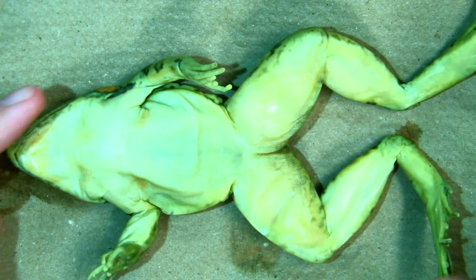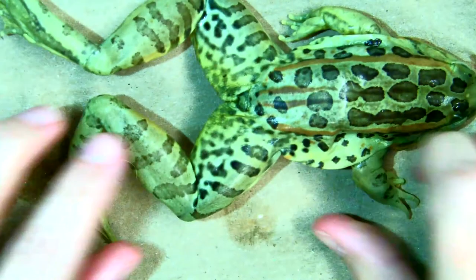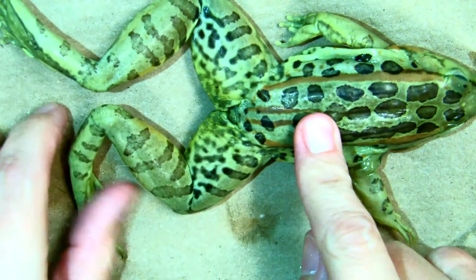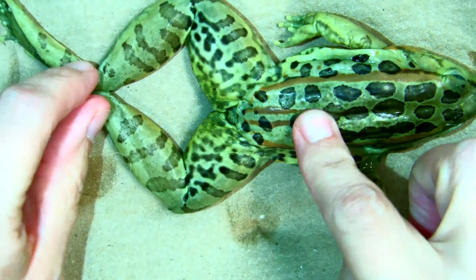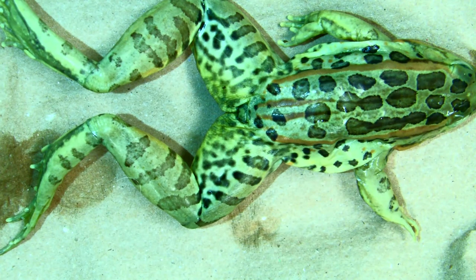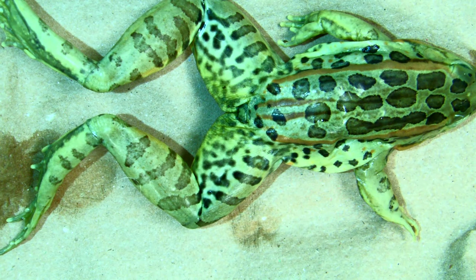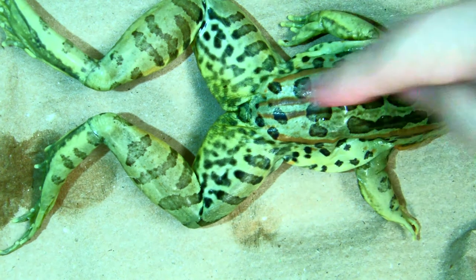You notice the ventral side is a lot lighter than the dorsal side. The dorsal side also has dark patterns on it to help them camouflage in the water. A predator from looking up, down, they can blend in.